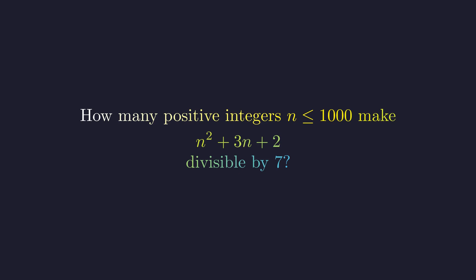We need to find how many integers up to 1,000 make this expression divisible by 7. Are we supposed to test n equals 1, then 2, then 3, all the way to 1,000? Absolutely not. That would be a nightmare.